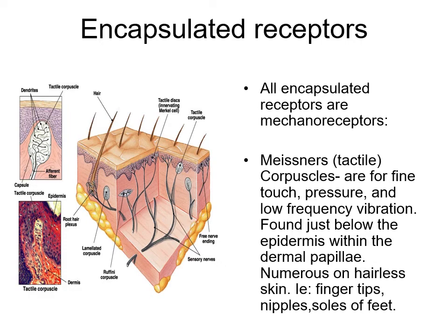There are also encapsulated receptors with a connective tissue capsule around them. These include the Meissner's tactile corpuscle, the Pacinian corpuscle, and the Ruffini's corpuscle — all with connective tissue around them. The Meissner's corpuscle is for fine touch, pressure, and low-frequency vibration, found just below the epidermis in the dermal papillae. They are very numerous wherever there's no hair, such as fingertips, soles of feet, nipples, and external genitalia — all very sensitive areas.